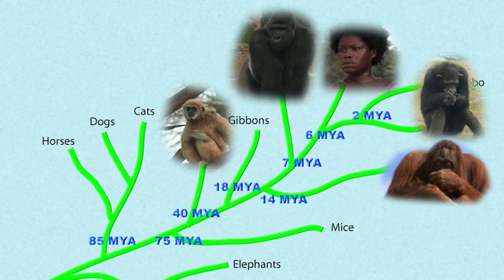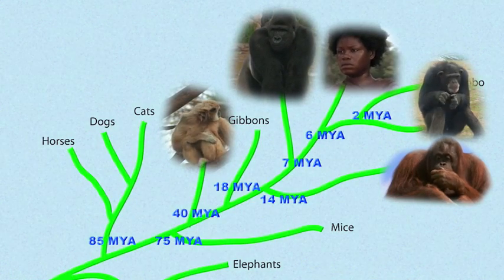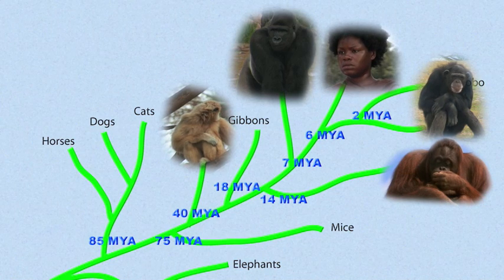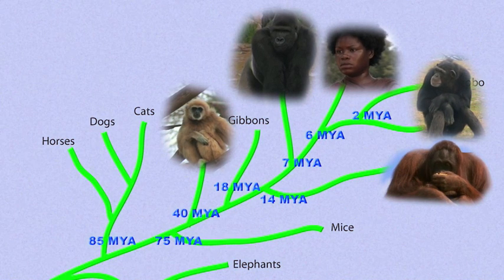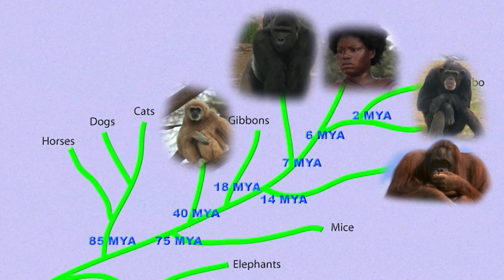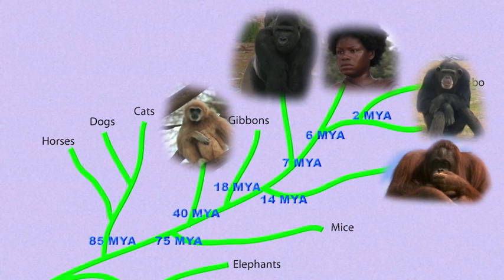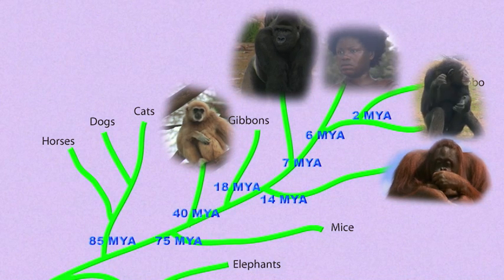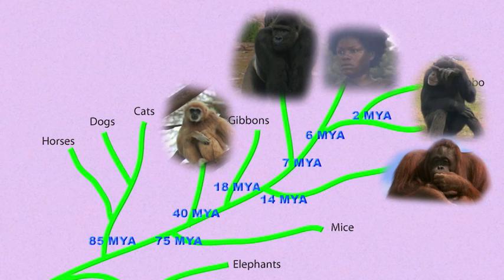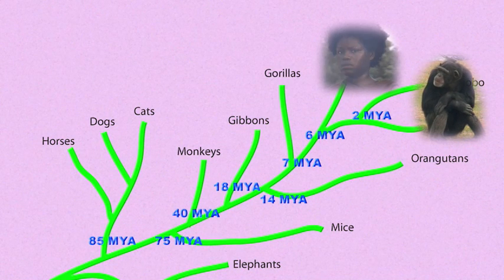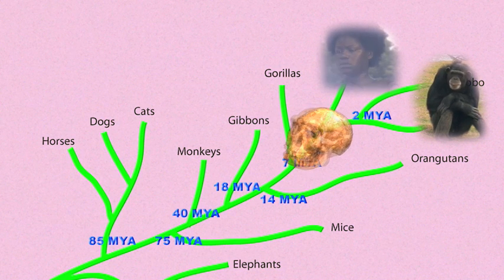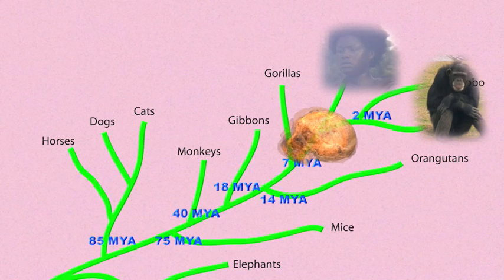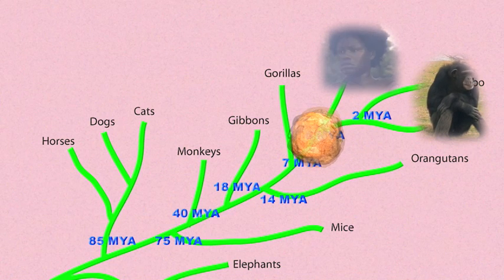A common misconception is that some modern species are descended from other modern species. This is rarely the case. Instead, closely related modern species evolved from a common ancestor — neither one from the other. Humans did not come from chimps. Both humans and chimps came from a creature that had more primitive features than either modern humans or modern chimps.